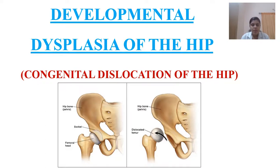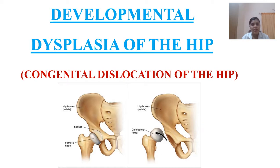Developmental dysplasia of the hip is a disease condition usually affecting children. It is also known as congenital dislocation of the hip, meaning that by birth itself the child may have a dislocated hip. We will cover the definition, types, clinical manifestations, and types of management we can provide to these children.